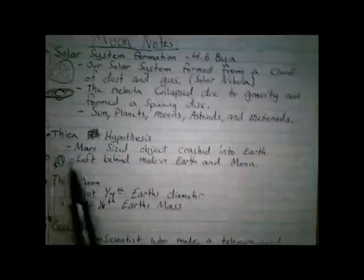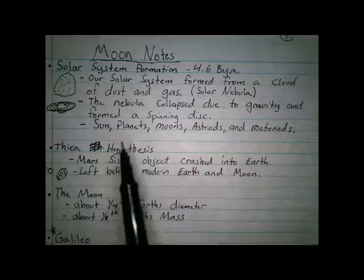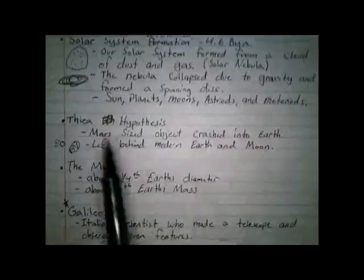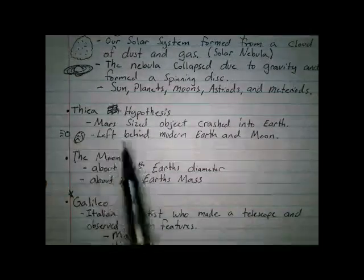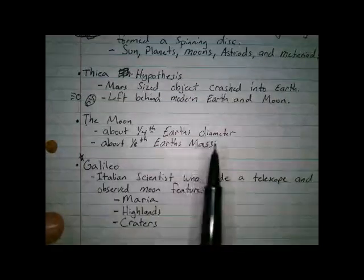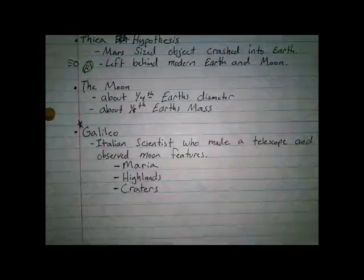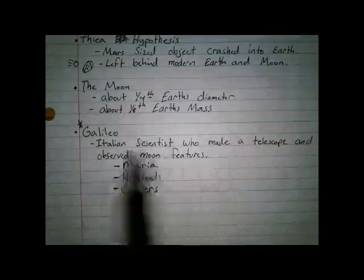So, to recap, Solar System Formation came from a solar nebula. The nebula collapsed and began to spin, formed sun, planets, moons, asteroids, and meteoroids, everything in our solar system. Anything that was left over got kicked out. The Thea Hypothesis states that one of those objects that got kicked out of orbit came and hit Earth and left behind what modern Earth looks like and our moon. The moon as it currently stands is about a fourth of Earth's diameter and is about one-eighth Earth's mass. For a long time, we thought that the moon was smooth and kind of this perfect celestial object. And it wasn't until Galileo came along with this telescope and he made highly detailed observations about the moon.